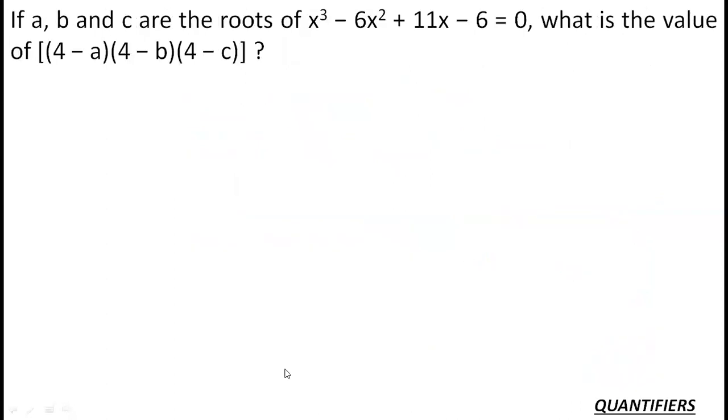The second question is a very good one. You need to be very crystal clear about some concepts, and this question can be done in few seconds only. In the class we have discussed in more detail the equations and how these equations are formulated. Let's see what it is. The equation - it is a cubic equation: x cubed minus 6x squared plus 11x minus 6 equals zero. And I need to find the value of (4 minus a)(4 minus b)(4 minus c).